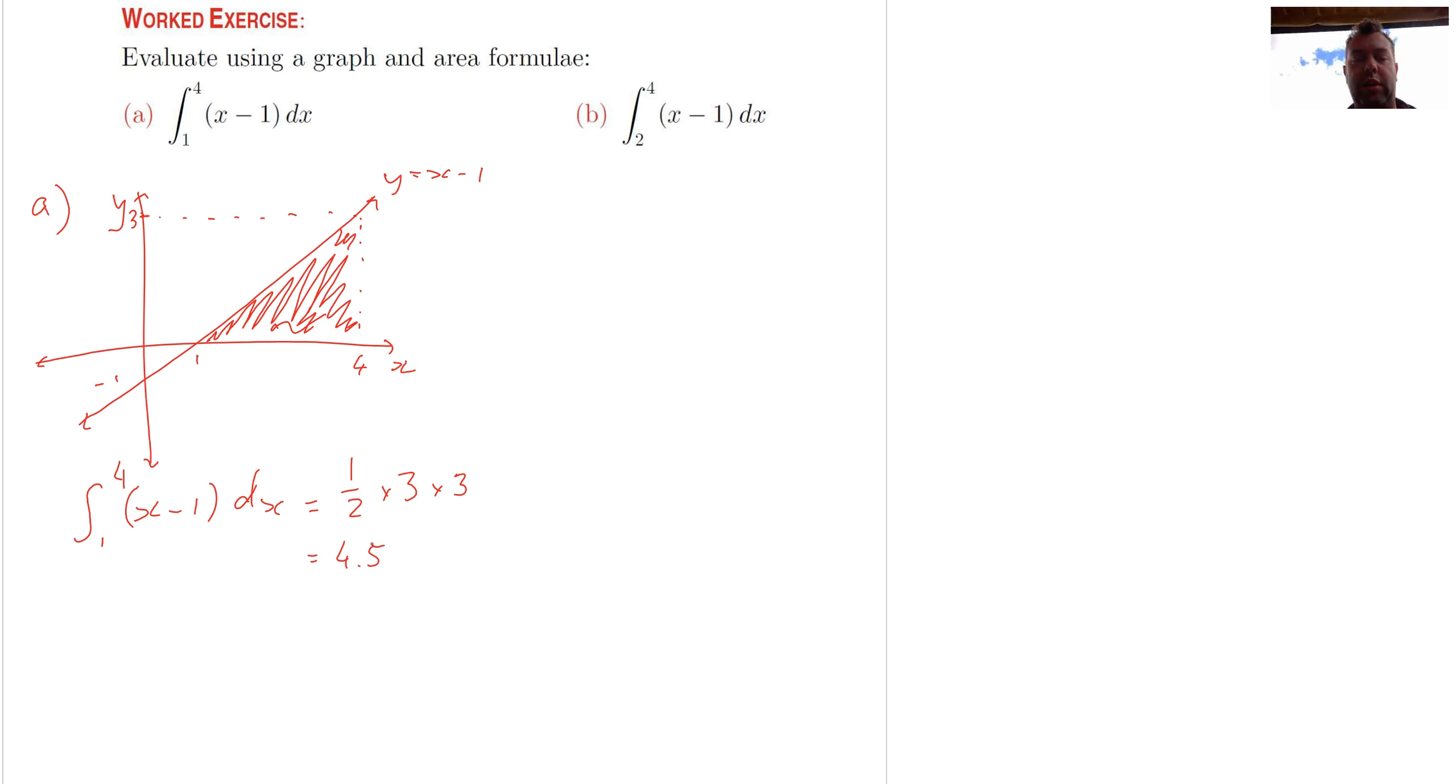Now we're working that area but we're not going to put units in there. Well, we could say square units but this does not strictly require that. So 4.5, there we go. A second one here to look at, same function, different bounds, will lead us to a slightly different calculation. Let's quickly sketch that up again. You can see in these sorts of questions it is quite important that we draw a sketch.